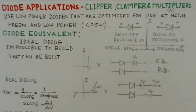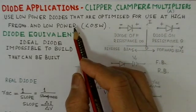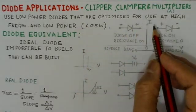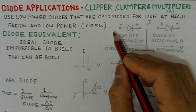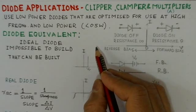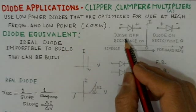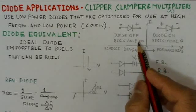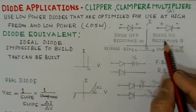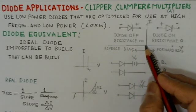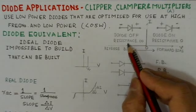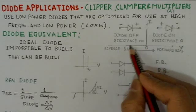This complete topic covers clippers, clampers, and related circuits. We use low power diodes or small signal diodes, which are suitable for high frequencies as well as low power operation. We'll now look at the equivalent circuit of a diode. For an ideal diode, it should work like an ideal switch — when forward biased, the switch is closed with zero resistance, and when reverse biased, the switch is open with infinite resistance.